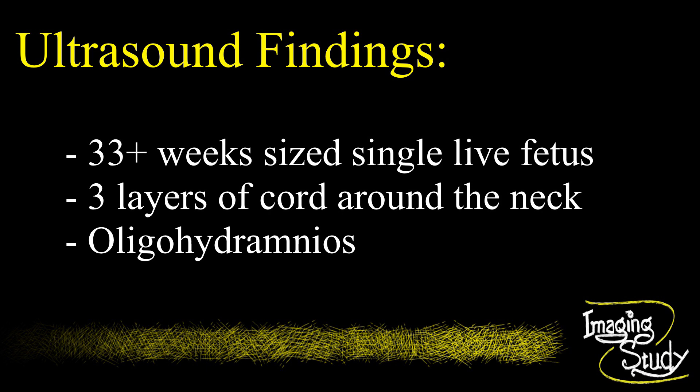On ultrasound, a 33-plus-week sized single live intrauterine pregnancy is seen. Amniotic fluid volume is reduced. Three layers of umbilical cord are seen around the fetal neck.